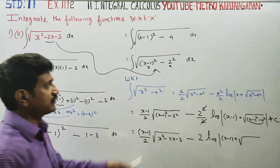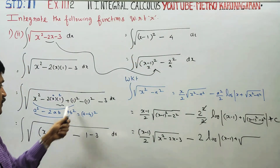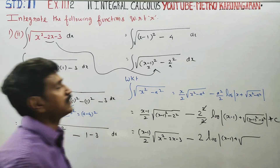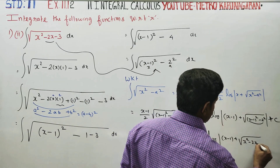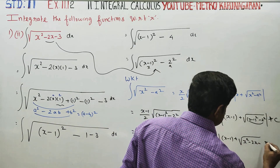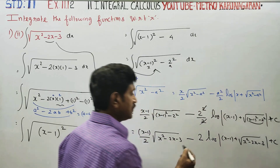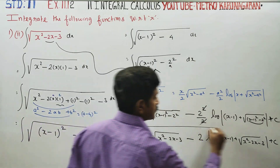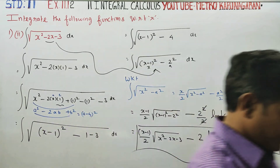This is the simplification. The final answer is x minus 1 by 2 times square root of x squared minus 2x minus 3, minus 2 logarithm of x minus 1 plus square root of x squared minus 2x minus 3, plus c. This is the final result of the integration. Thank you.